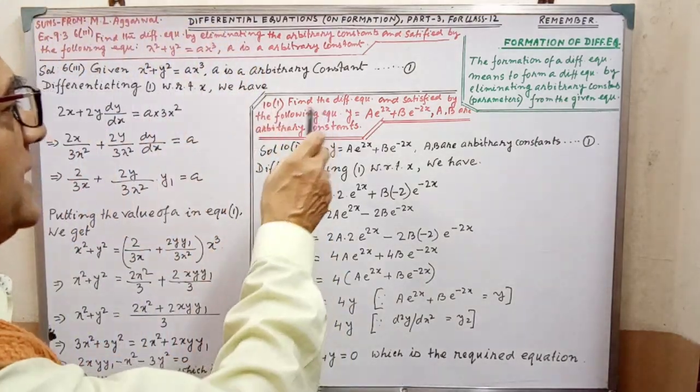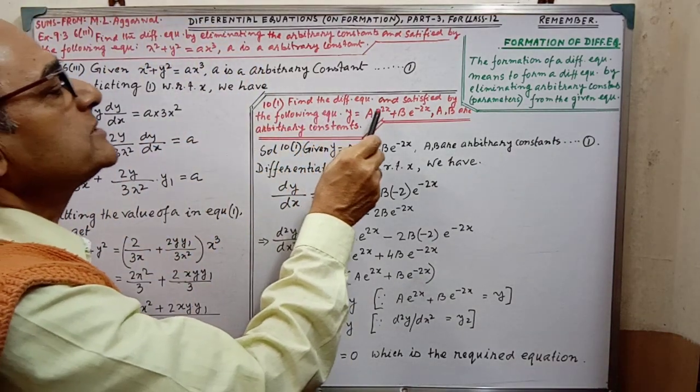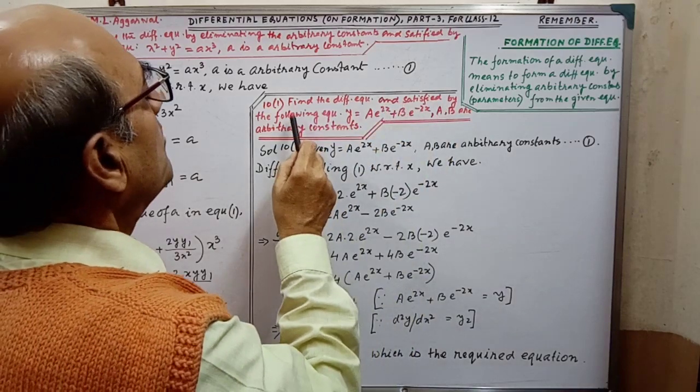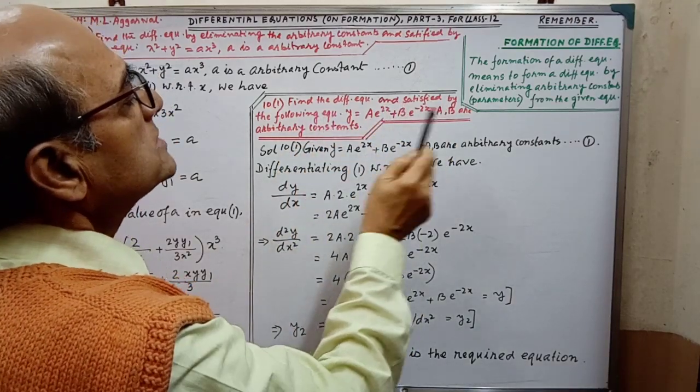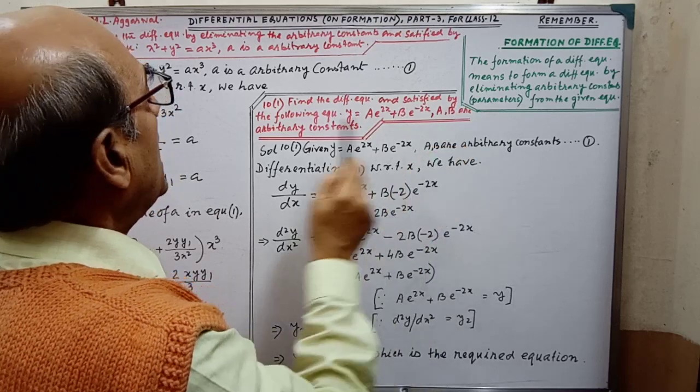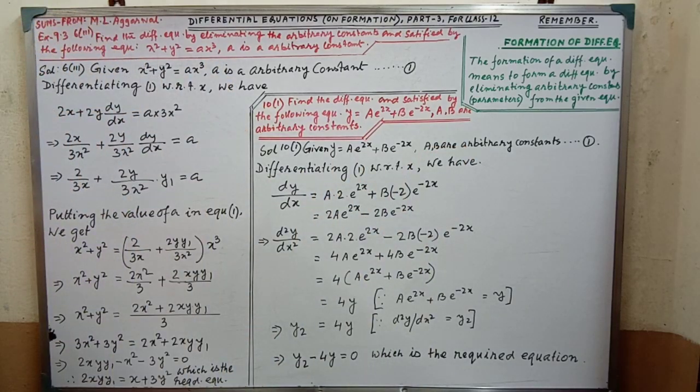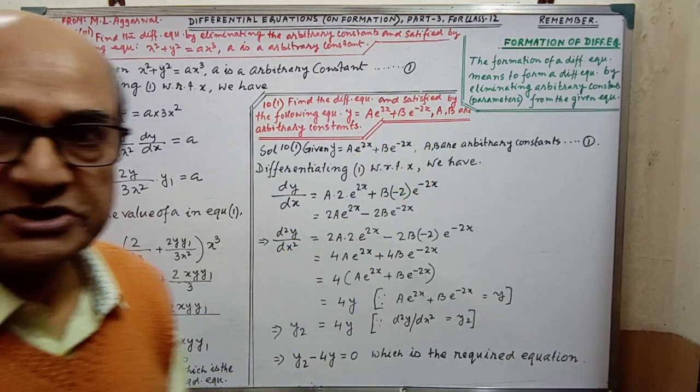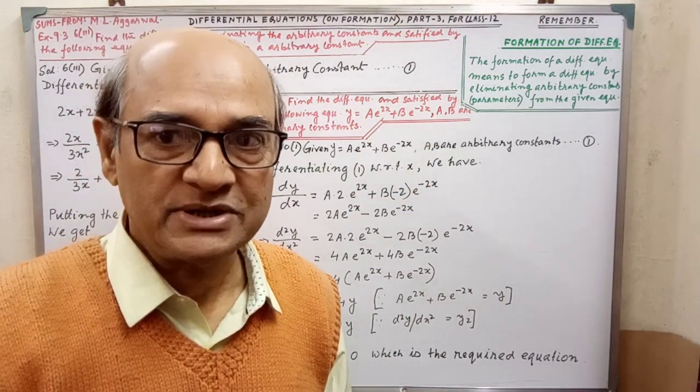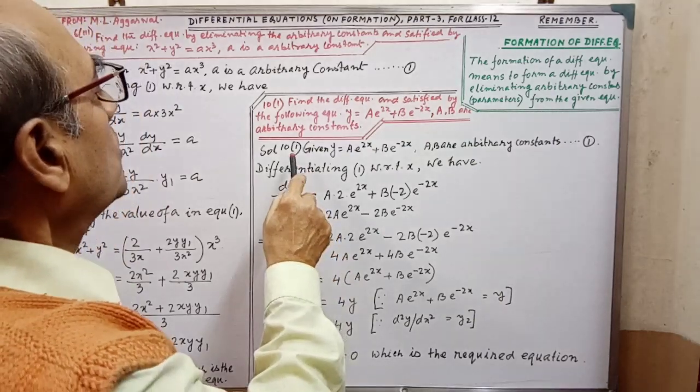Next, another example. That is, find the differential equation and satisfied by the following equation. This a, b are arbitrary constants. Here, only one constant, and here is 2 constants. This part you have to notice attentively.